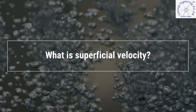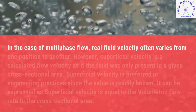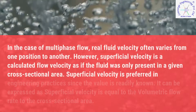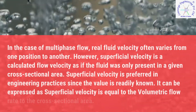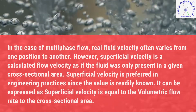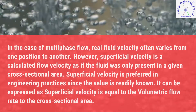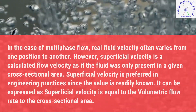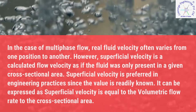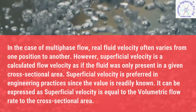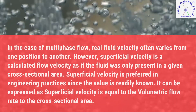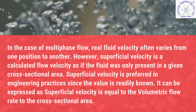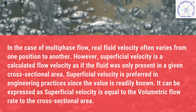What is superficial velocity? In the case of multiphase flow, real fluid velocity often varies from one position to another. However, superficial velocity is a calculated flow velocity as if the fluid was only present in a given cross-sectional area. Superficial velocity is preferred in engineering practice since the value is readily known. It can be expressed as superficial velocity equals the volumetric flow rate divided by the cross-sectional area.